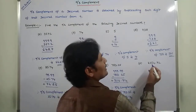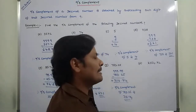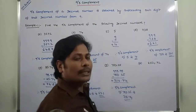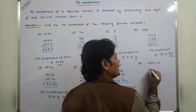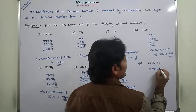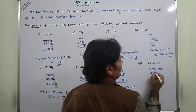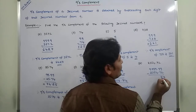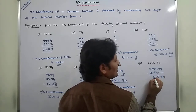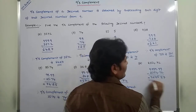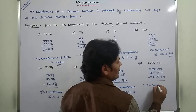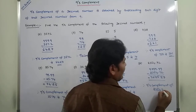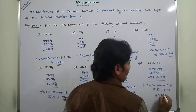Last problem. Find the 9's complement of 2354.72. How many digits are there? 6 digits: before the decimal point 4 digits, after the decimal point 2 digits. Each digit is subtracted from 9. 9 minus 2 is 7, 9 minus 7 is 2, 9 minus 4 is 5, 9 minus 5 is 4, 9 minus 3 is 6, 9 minus 2 is 7. Therefore, the 9's complement of 2354.72 is 7645.27.